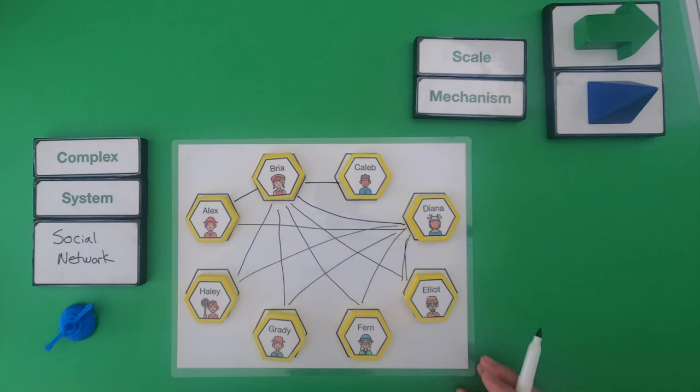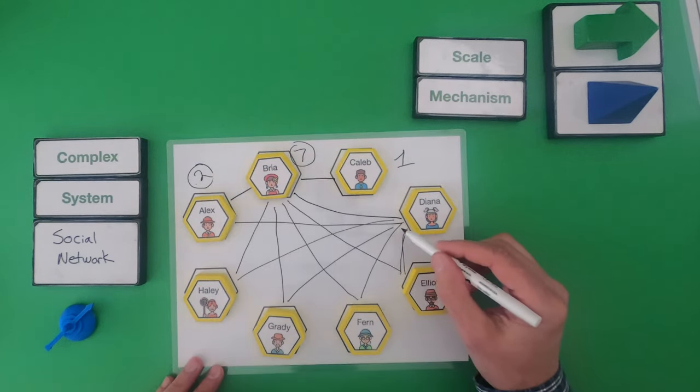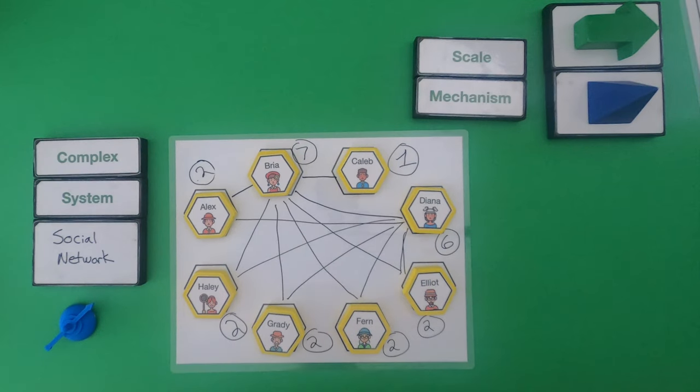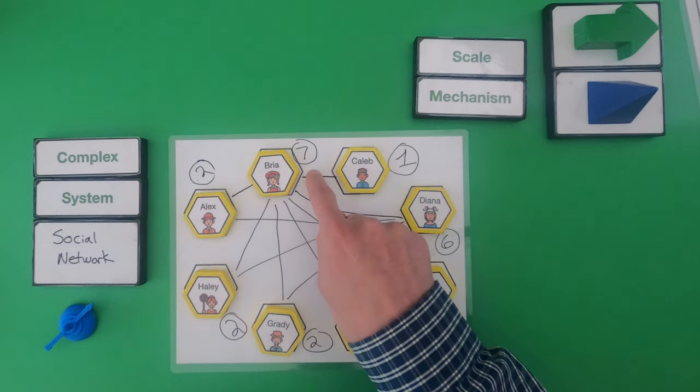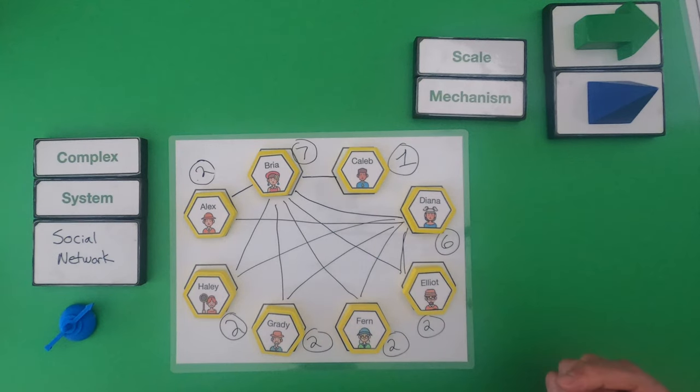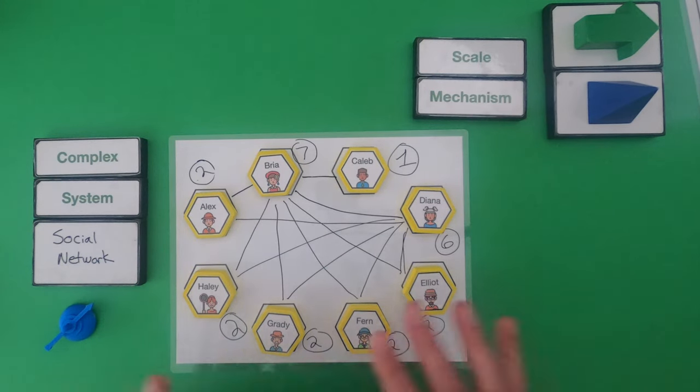Now let me write down how many connections each of these people have. So we find that Bria has seven connections. Caleb only has one connection. Diana has six connections. And everybody else has two connections. So did you figure out what the scale mechanism was? Let me try it again.